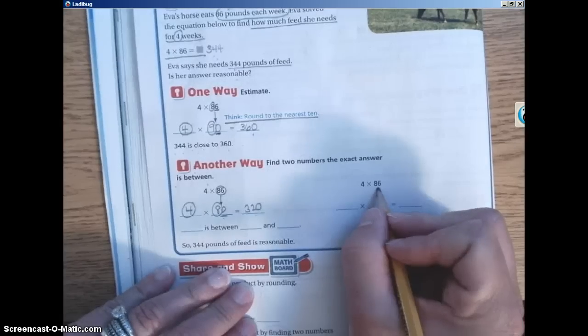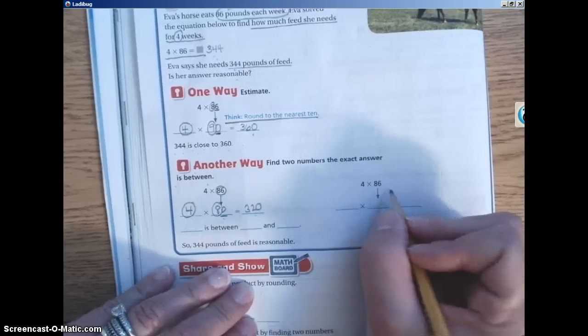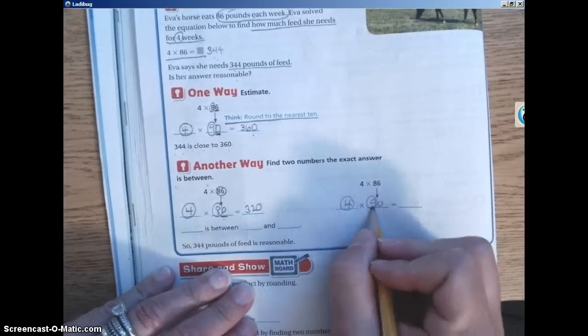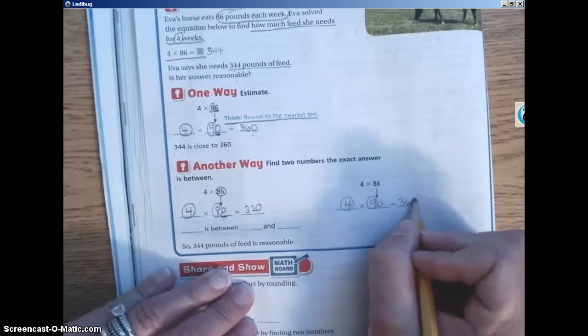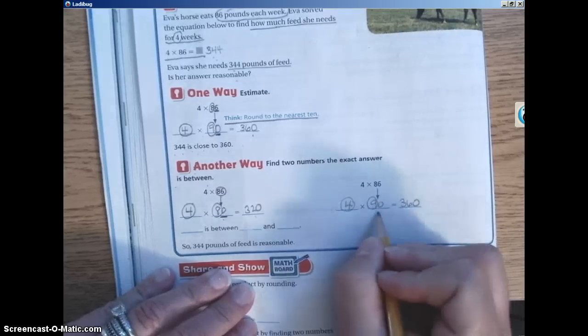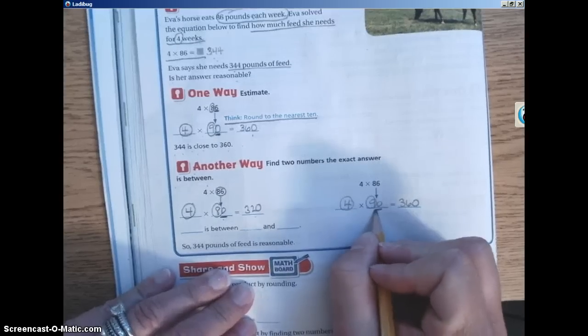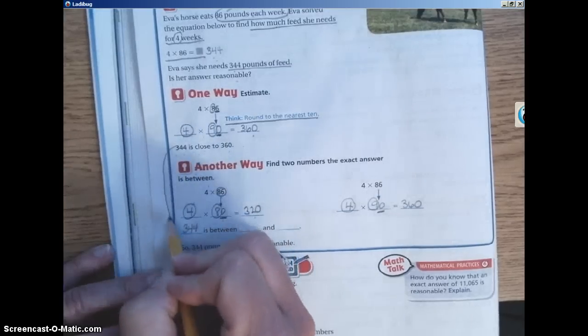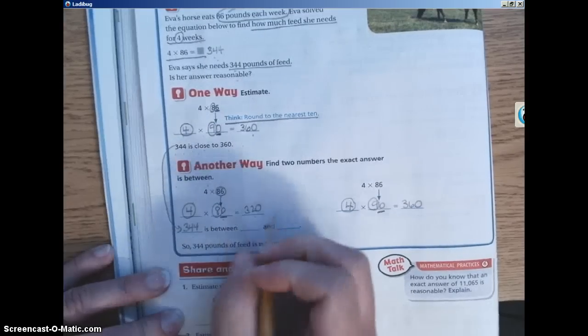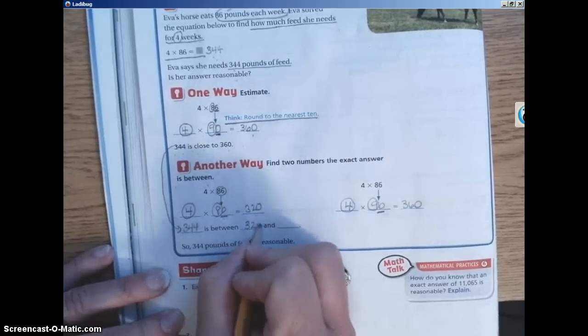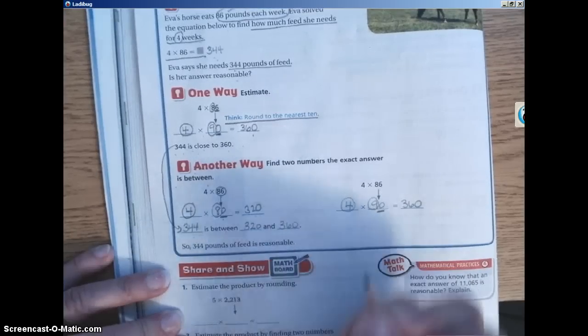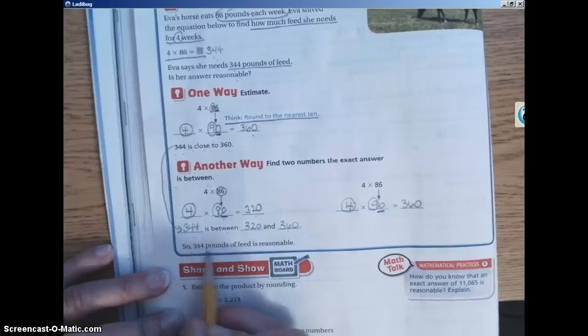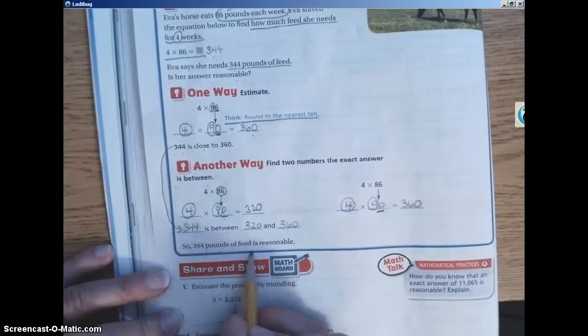Then we also know that 86 is between, like I said, 80 and 90. So our second one would be 4 times 90. Using mental math, 4 times 9 is 36 plus the 0 from the original factor. So then down here we know that 344, which is the actual answer, is between 320 and 360. So even by looking at that range, we can again verify that 344 pounds of feed is reasonable.